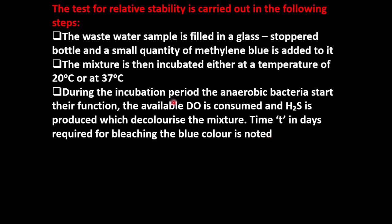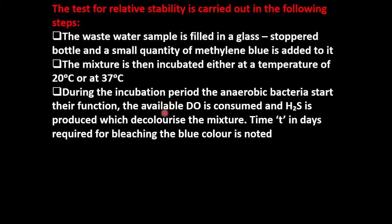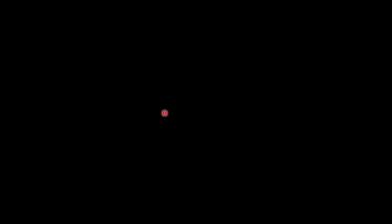Using the noted time, relative stability S is calculated as: S = 100 × (1 − 0.794^T20), or S = 100 × (1 − 0.63^T37).